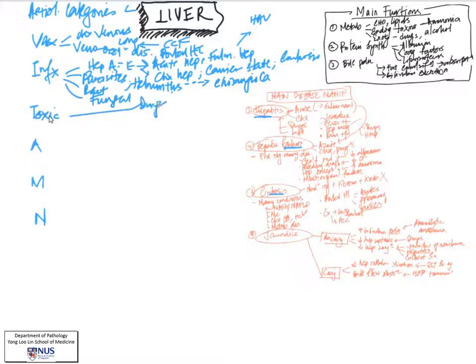T stands for toxic. Drugs are a very important toxin, as is alcohol. Chronic over-consumption of alcohol can give rise to a host of liver diseases including steatohepatitis and steatosis.